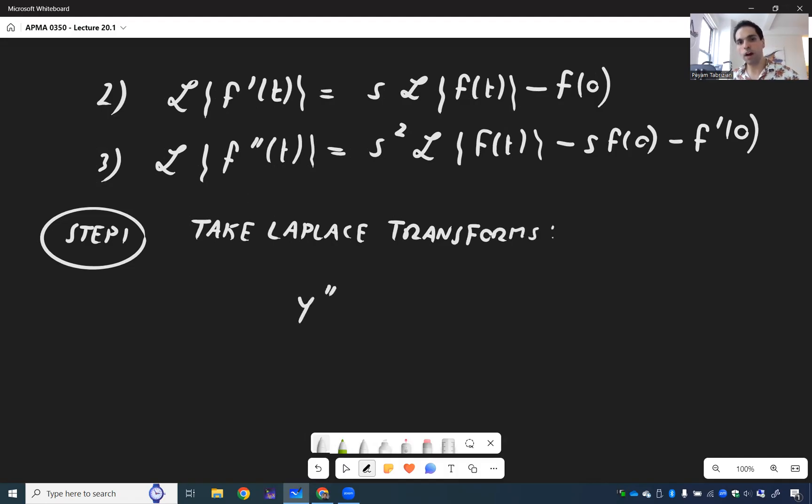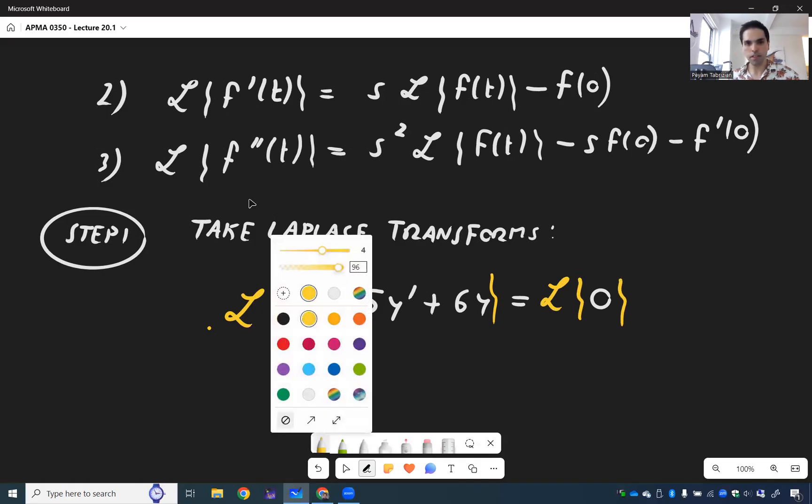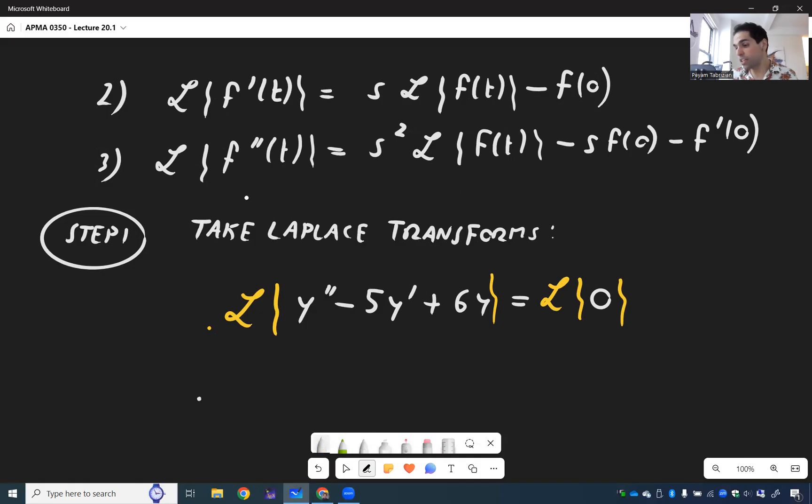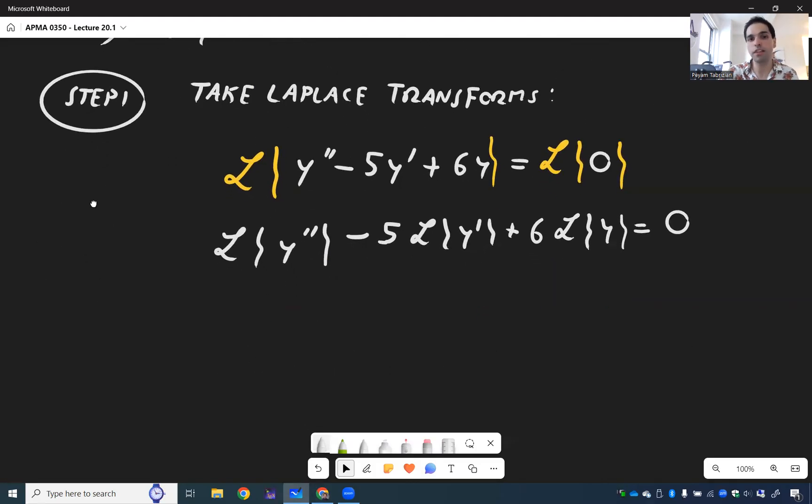Because once again, we started with y double prime minus 5y prime plus 6y equals 0. And you just want to apply L on both sides. So Laplace of this equals Laplace of that. And then I want to remind you that Laplace transform is linear.